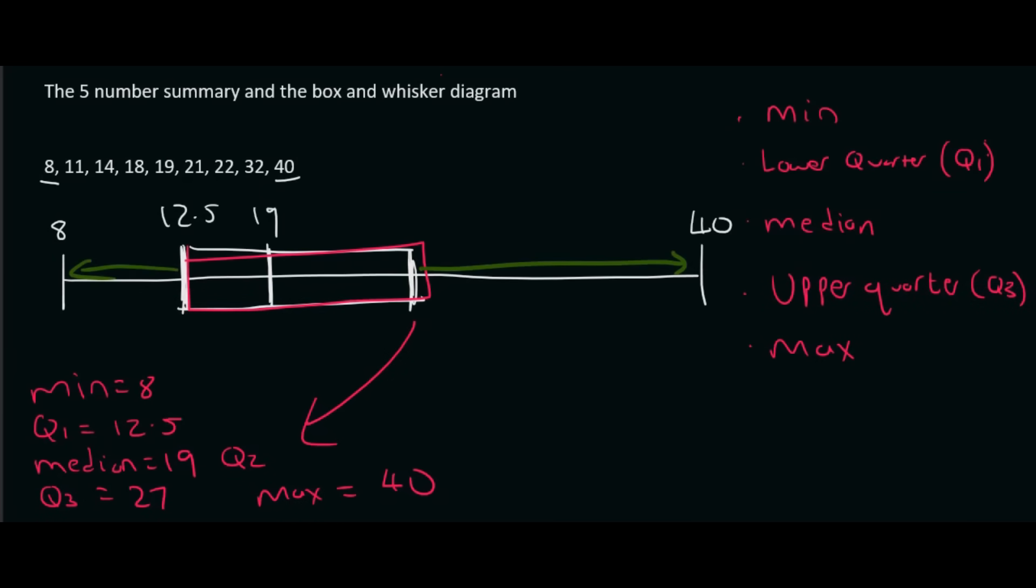Then your teacher might ask you, is this data skewed to the right, skewed to the left? Don't even stress about what that means. All you need to know is the longer whisker is on the right-hand side. So we will just say skewed to the right.